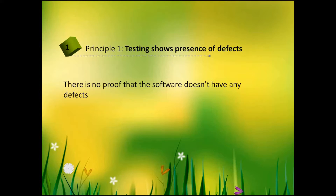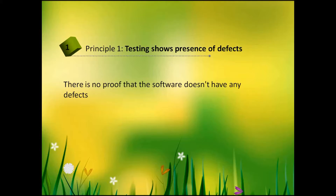There are seven testing principles. The first principle: testing shows presence of defects. Testers test software to verify that an application works according to requirements, but when they run their tests and don't find any defects, it doesn't mean the software is bug-free. There is no proof that the application doesn't have any defects, mainly because some testing scenarios may not be considered, as there are so many combinations of inputs, interactions between hardware and software, changes in environment, changes in operating system, and additional parameters which can influence the performance. Testing can show that defects are present, so testers do their best trying to find as many defects as possible.